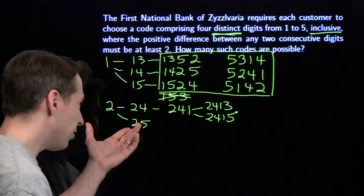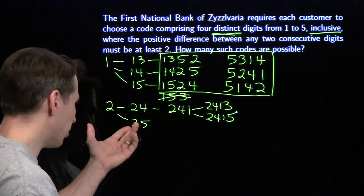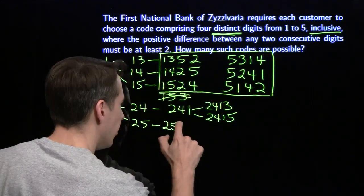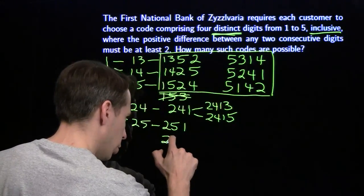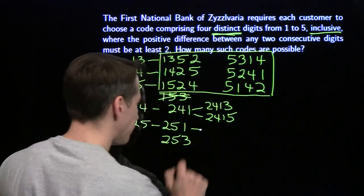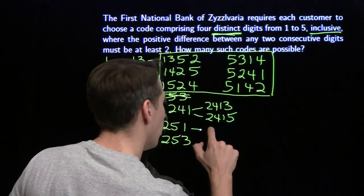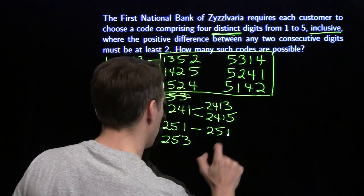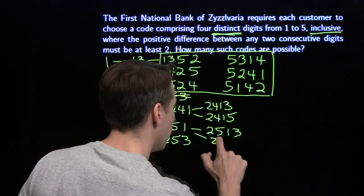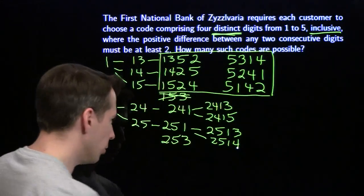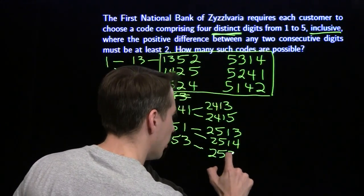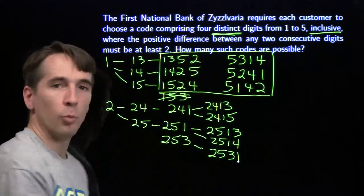If we start 2-5, we can put a one or a three next — we can't put a four right after the five. So we get 2-5-1 or 2-5-3. Starting 2-5-1, we can put a three or a four after that: giving 2-5-1-3 and 2-5-1-4. Starting 2-5-3, we can't put the four after that, but we can put the one: giving 2-5-3-1. That's five solutions starting with two.